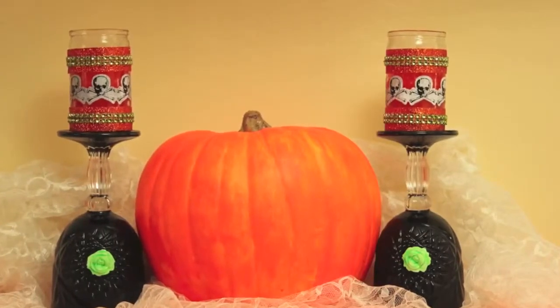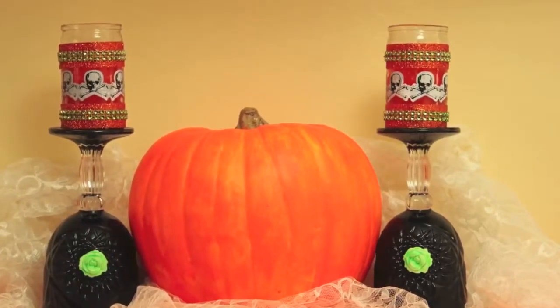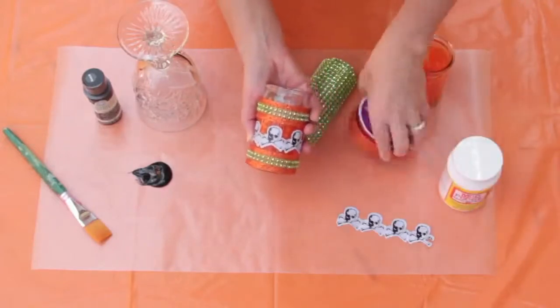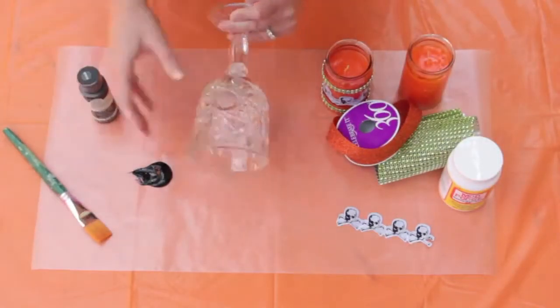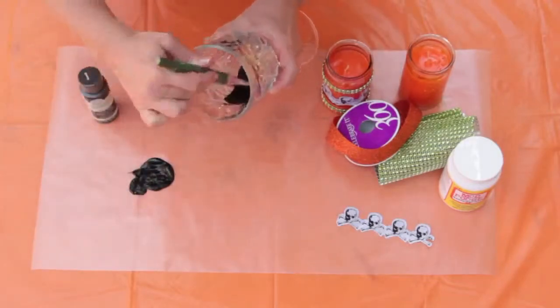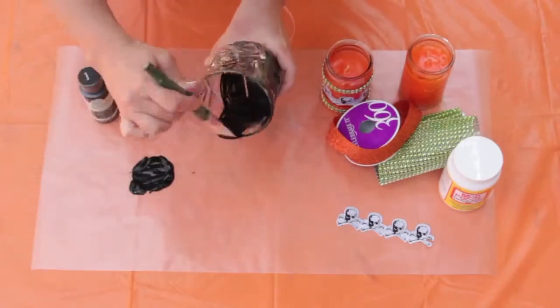Our candelabras were made with dollar store wine glasses and candles. We Mod Podged skull papers around the candles and added some bling ribbon with hot glue. We used folk art enamel paint to color the inside and base of the glass.